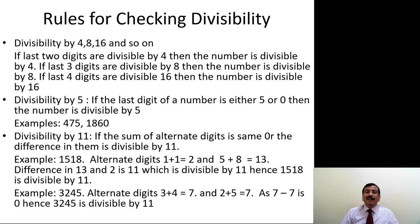For divisibility by 4, 8, 16, and so on: if the last 2 digits are divisible by 4, the number is divisible by 4; if the last 3 digits are divisible by 8, the number is divisible by 8; if the last 4 digits are divisible by 16, the number is divisible by 16. The pattern is: last n digits divisible by 2ⁿ. For divisibility by 5, if the last digit is either 5 or 0, the number is divisible by 5 — for example, 475 or 1860.